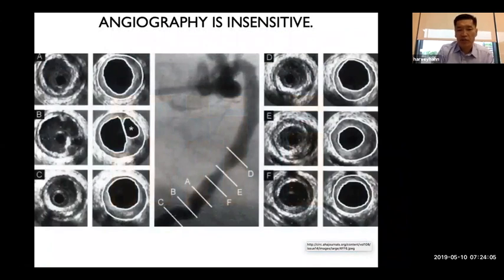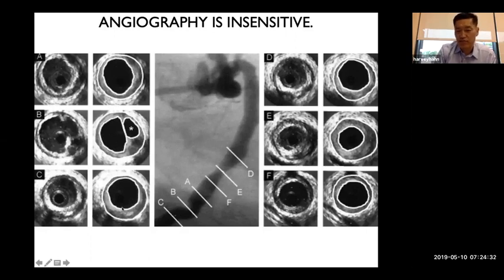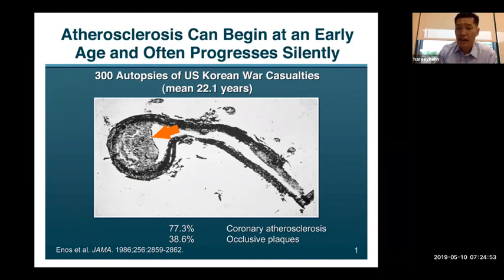Angiography is not perfect — IVUS (intravascular ultrasound) shows arteries are much worse off than the dye images suggest. Atherosclerosis begins very early. In the famous Korean War study, autopsies of American soldiers with an average age of 22 found that 77% already had arterial blockages, and almost 40% had 100% occlusions in some arteries.